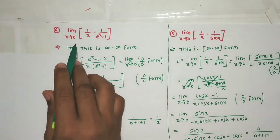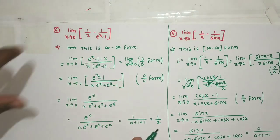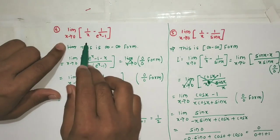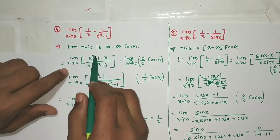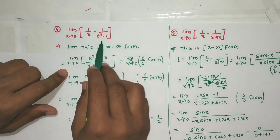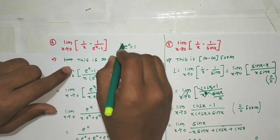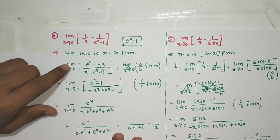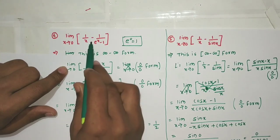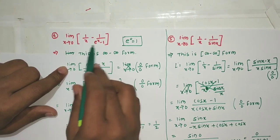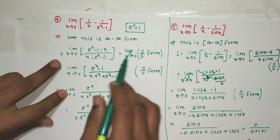Example 4: limit x tending to 0 of [1/x - 1/(eˣ - 1)]. This is infinity minus infinity form. After cross multiplication, we get [(eˣ - 1) - x] / [x·(eˣ - 1)]. Putting x=0: eˣ - 1 = 0 and x = 0, so numerator = 0 and denominator = 0·0 = 0. This is 0/0 form.